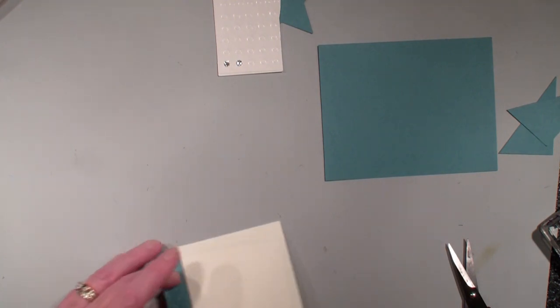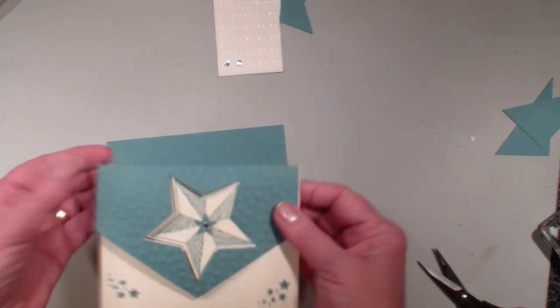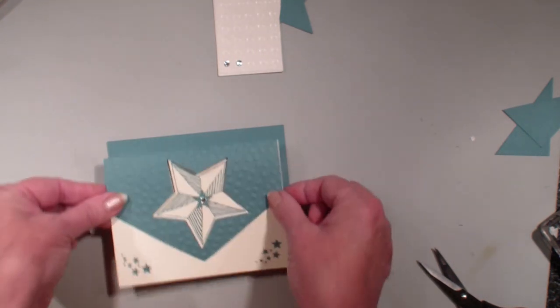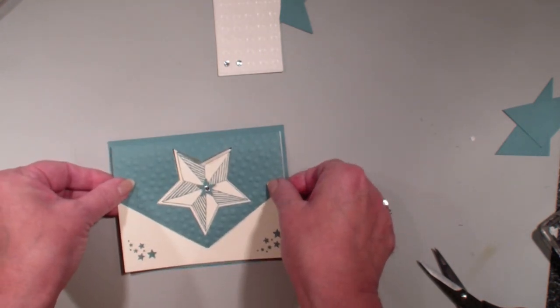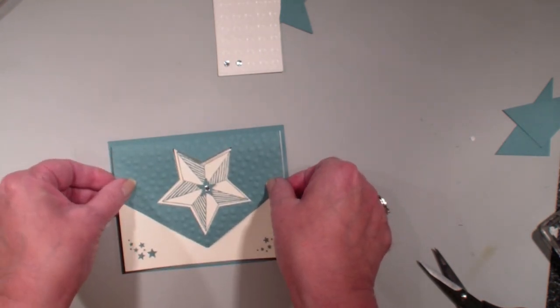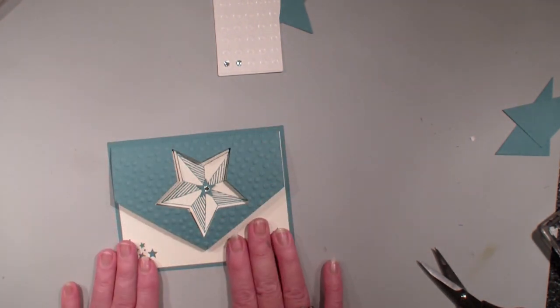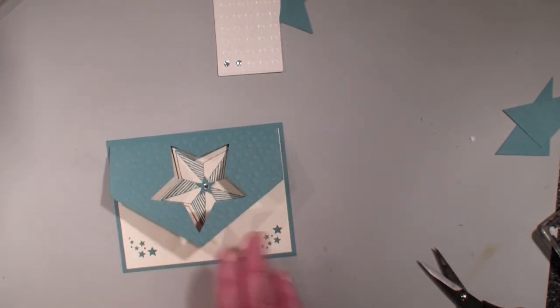Next what I'm going to do is I'm going to take my snail, run that all the way around my card. I'm going to put that on so that it hides the back onto a piece of the Lost Lagoon in four and a quarter by five and a half.